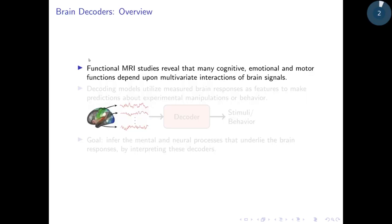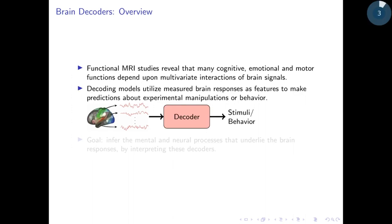Functional MRI studies reveal that many cognitive, emotional and motor functions depend upon multivariate interactions of brain signals. Decoding models use these brain responses as input to predict experimental manipulations or behavior. But our main goal is to interpret these decoders in order to infer the mental and neural processes underlying these brain responses.